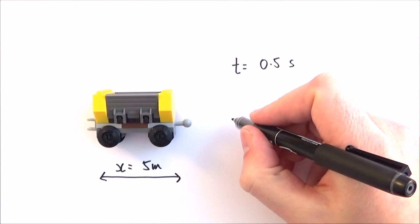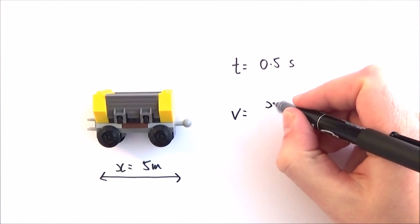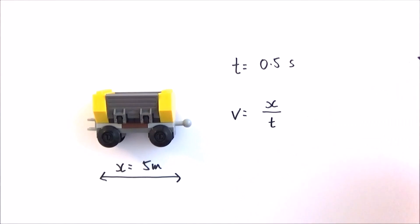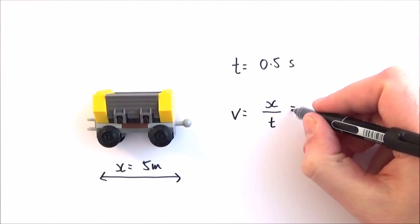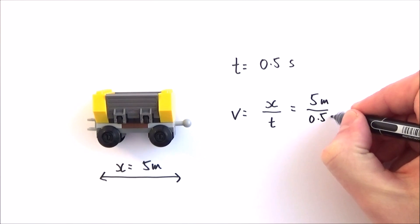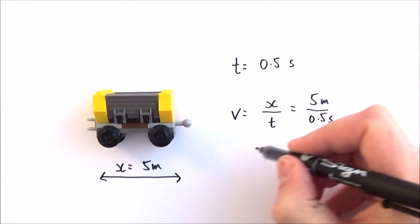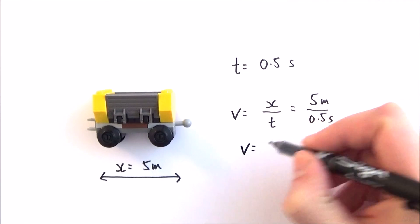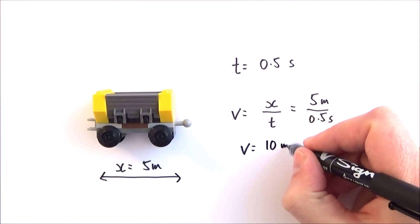What we can then do is think about our speed equals distance over time equation. So speed is equal to distance over time, and the distance in this case was maybe 5 meters and it went past in 0.5 of a second. So the velocity in that case of that carriage, 5 over 0.5, was equal to 10 meters per second.